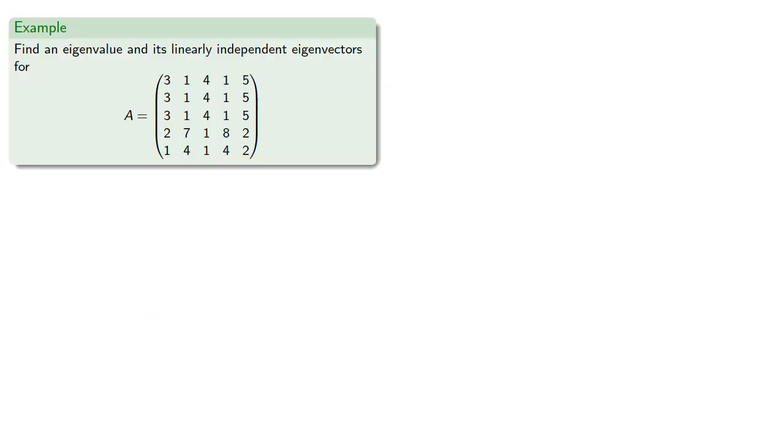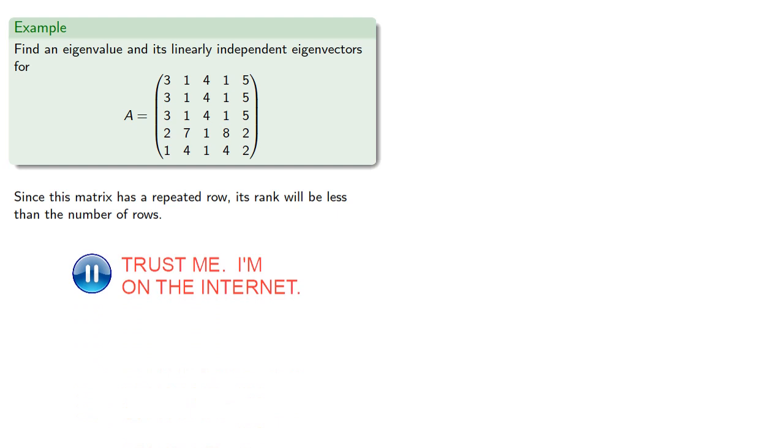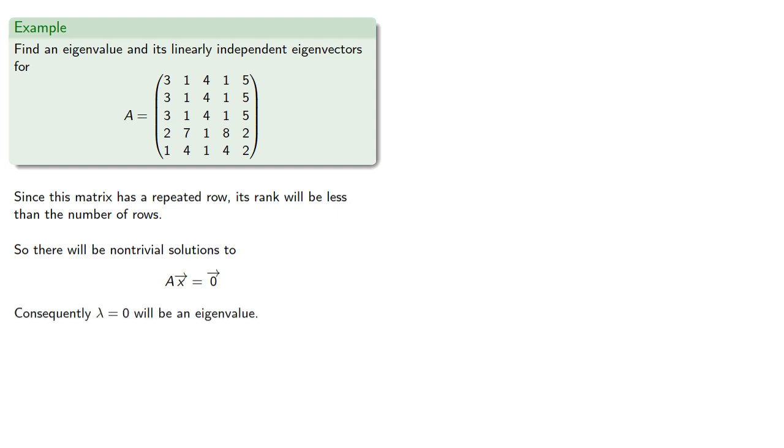So let's try to find an eigenvalue for this matrix. Since this matrix has repeated rows, we know its rank will be less than the number of rows. So there will be non-trivial solutions to the matrix equation. And consequently, lambda equals zero will be an eigenvalue.